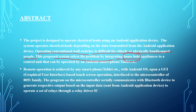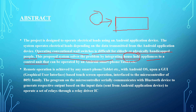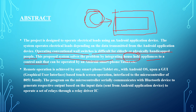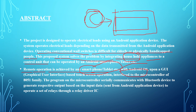That is the reason why we have proposed a system which solves the problem of integrating household appliances to a control unit. The appliances will be controlled through a device using knowledge of electronic microcontrollers. Just connecting different gadgets and equipment gives the result of executing appliances through your smartphone. The remote operation is issued by any smartphone or tablet with Android OS, using a GUI graphical user interface based touch operation.